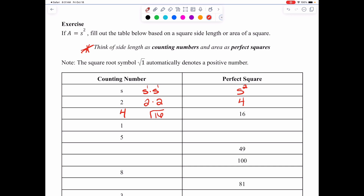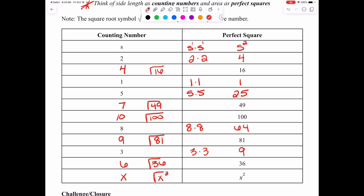Here are the answers to the rest of the table. 1 times itself gives 1 — 1 is a perfect square. 5 times itself is 25 — 25 is a perfect square. If 49 is a perfect square, the square root of 49 is 7. If 100 is a perfect square, the square root of 100 is 10. For counting number 8, eight times itself is 64. The square root of 81 is 9. 36 is a perfect square, so the square root of 36 gives counting number 6. And x squared is a perfect square, so the square root of x squared gives x as the counting number.